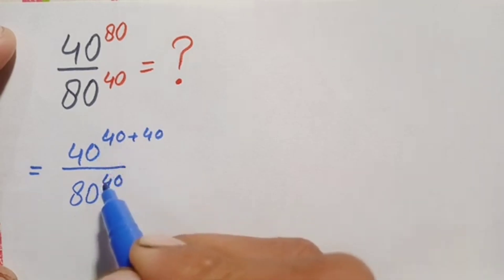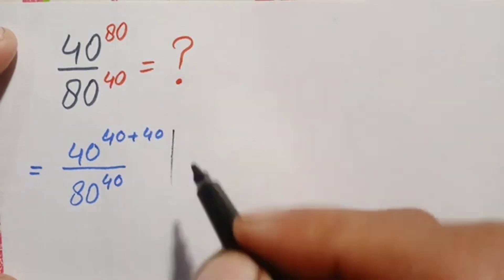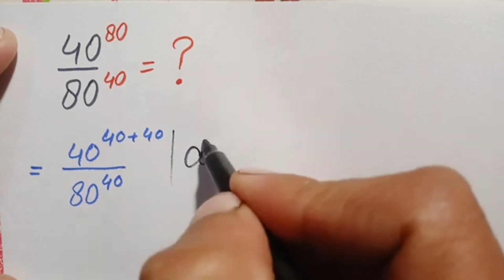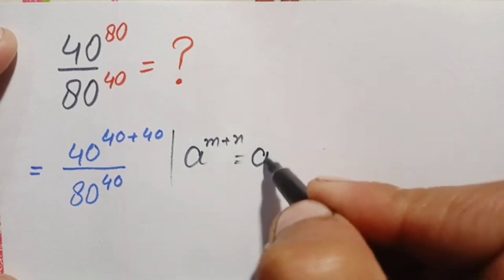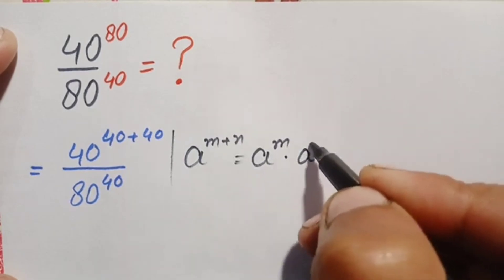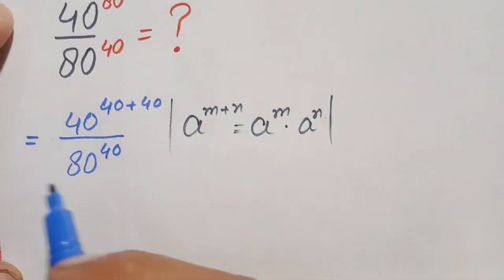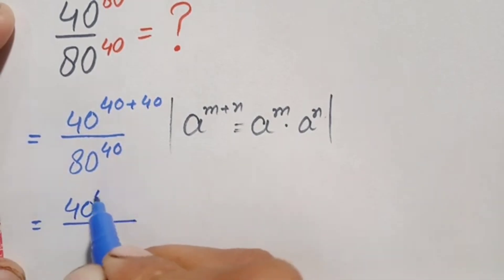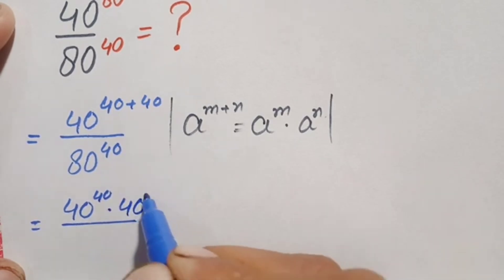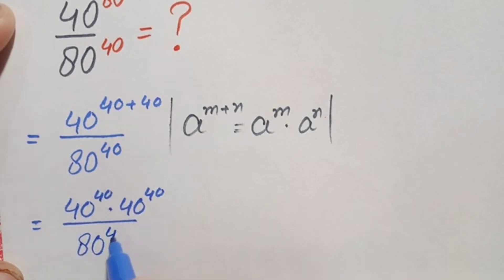In the numerator we apply the exponential identity: a raised to power (m + n) equals a raised to power m times a raised to power n. Using this identity, the numerator becomes 40 raised to power 40 times 40 raised to power 40, divided by 80 raised to power 40.